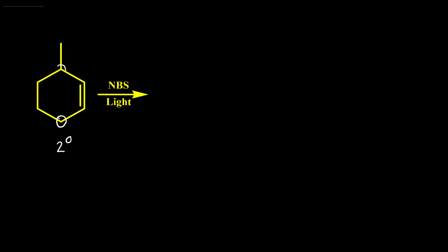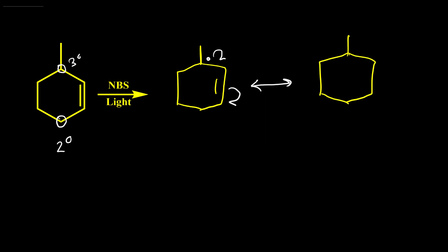In this example again we have two different allylic positions: this carbon is secondary allylic and this carbon is tertiary allylic. So again the tertiary radical forms during this reaction, and then we have resonance — the double bond moves here and the radical goes here. Then if I put bromine instead of this radical I have the structure of the product. Here are the two products in this reaction.